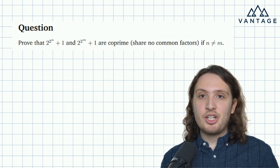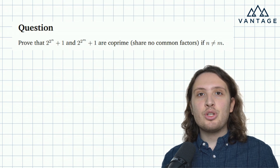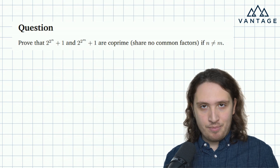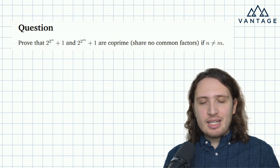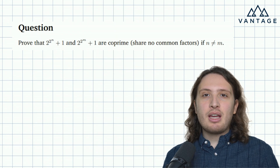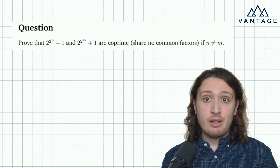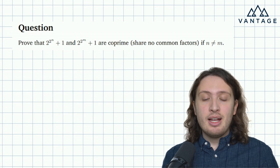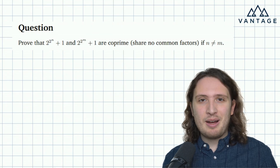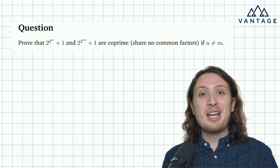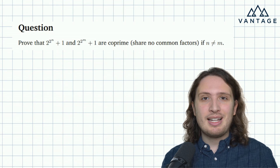So we're considering the expressions 2 to the 2 to the n plus 1, and 2 to the 2 to the m plus 1, and we need to show that these are going to be co-prime when n and m are different numbers from each other. The term co-prime just means no common factors — if you didn't know the term, the interviewer certainly would not hold it against you and would be happy to give you that definition.